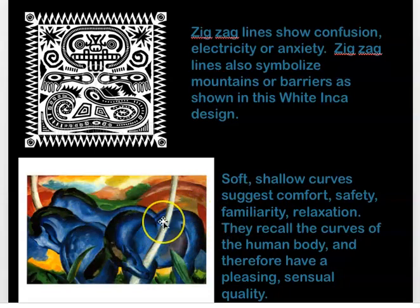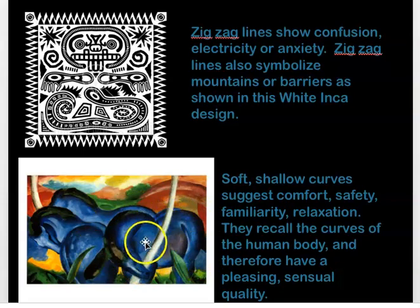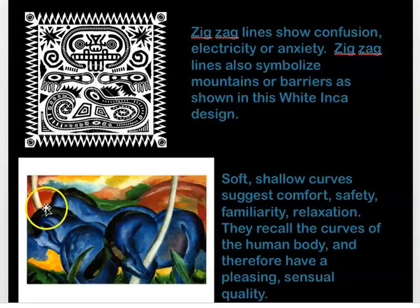This painting by Franz Marc is abstract because the horses aren't really blue — he used blue as a symbolic color to mean something to him. Franz Marc was a really innovative German artist, right around the time of World War I. This painting is actually in Minneapolis at the Walker Art Center, and you can go see it in person. It is absolutely gorgeous, glowing with color — one of my favorites because of all the curved lines. It's a very gentle, graceful painting.